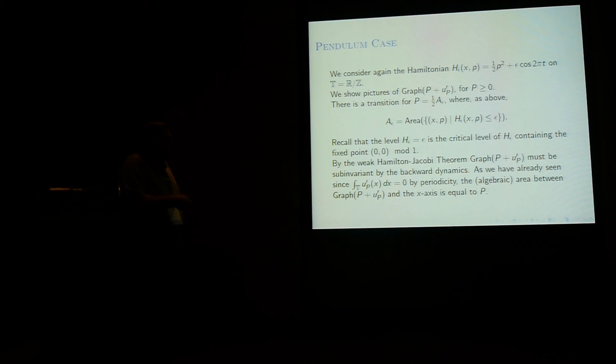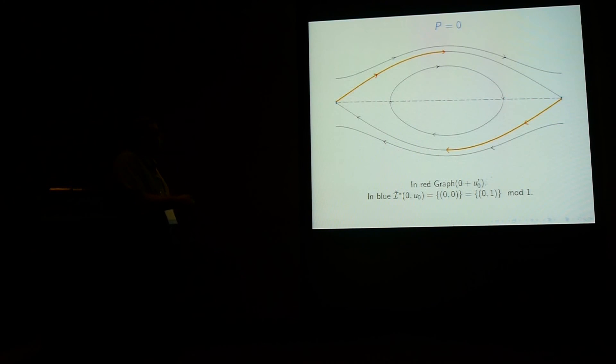Now let me illustrate this theorem in the pendulum case. So we get back to this Hamiltonian. And I'm going to show the graph of P plus u'ₚ for p non-negative. And of course u'ₚ has some value of p will not be defined everywhere. But in fact, in that case it will be even more than that. But there is a transition at p equals one half of A_epsilon, where again A_epsilon is the area of what is inside the singular level. And let me remind you that this is a critical level containing the fixed point. And by the way Hamilton-Jacobi theorems, this graph must be... So this is one of the important problems to remember. And as we have already seen, in this case again the integral of the derivative of this Lipschitz is going to be zero because the integral of the derivative, which is function, is the function, and periodicity.